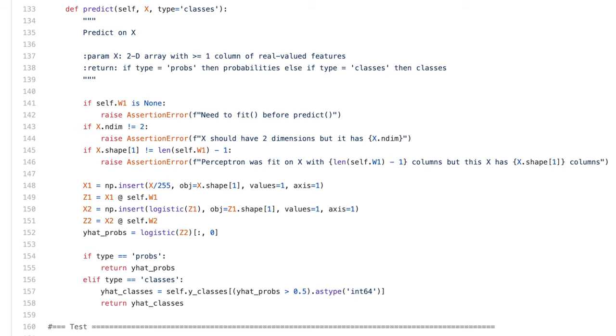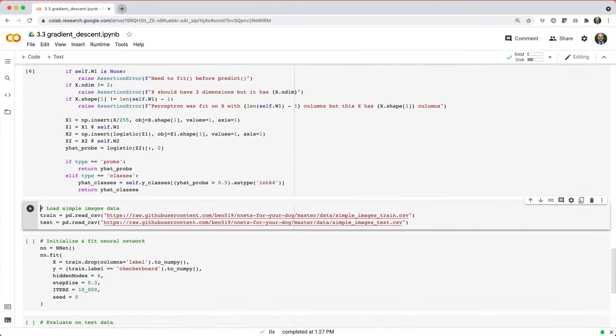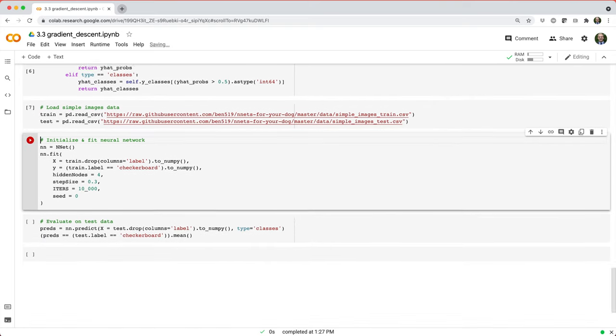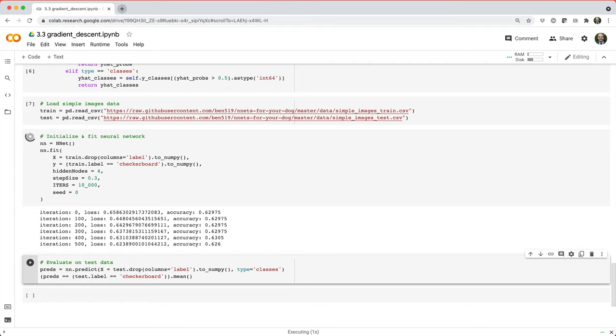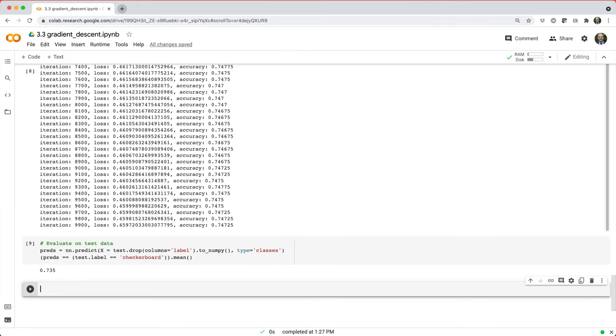Lastly, the predict method is nearly the same as it was before, except I incorporated the logistic function, and I added the ability to return the predicted class labels or the predicted class probabilities. Let's see how it performs on the simple images data. As usual, we'll start by loading the simple images data into train and test data frames. Then we'll initialize and fit a neural network with four hidden nodes to identify checkerboards, with step size 0.3, 10,000 iterations, and random seed 0. And lastly, we'll use the fitted network to make predictions on the test data.